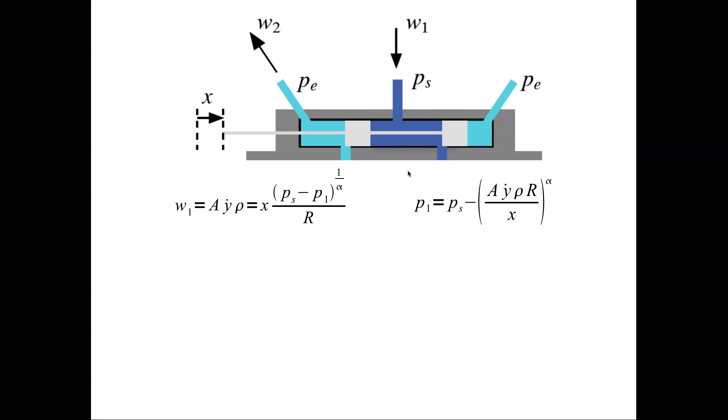Rearranging, we can get P1 as P1 equal to Ps minus rho Y dot rho R divided by X to the power alpha. As I explained in the previous lecture, alpha is an index that determines if this system is the linear laminar flow or turbulent flow. R is the resistance of the orifice.